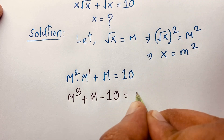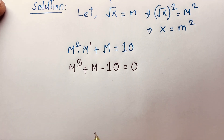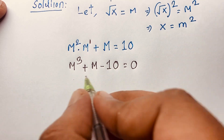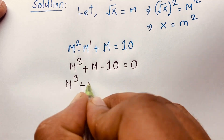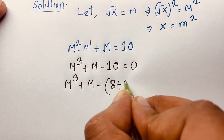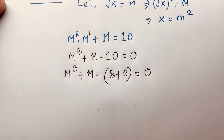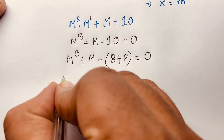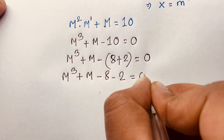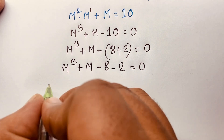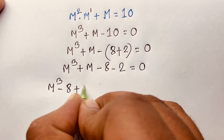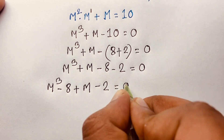So at this moment we have m cubed plus m minus 10 equals 0. Now I split minus 10 as minus 8 minus 2, giving us m cubed plus m minus 8 minus 2 equals 0. Then rearranging, it becomes m cubed minus 8 plus m minus 2 equals 0, moving the 8 to give negative 8.